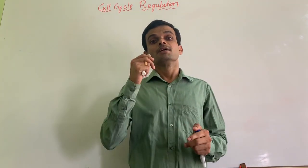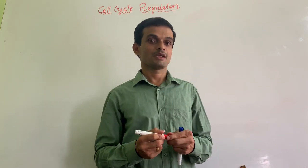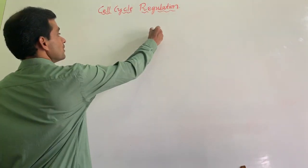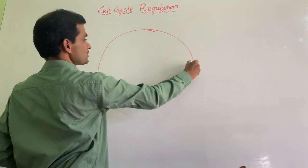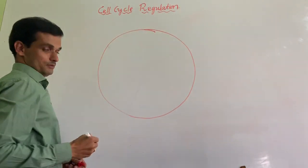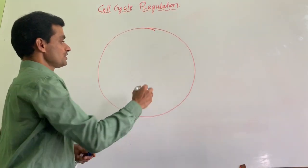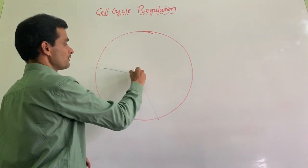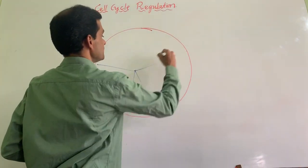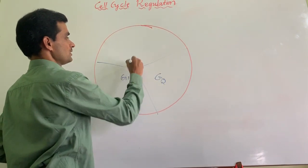A mammalian cell would take around 20 to 24 hours to complete a cell cycle. We have studied this in first year. This is divided into M phase, G1 phase, S phase, and G2 phase.